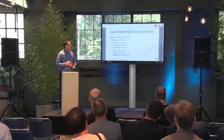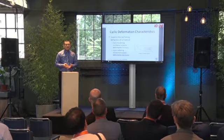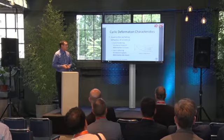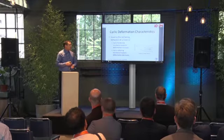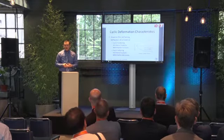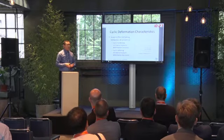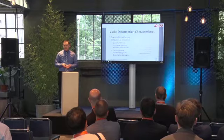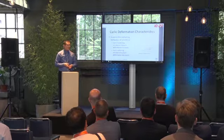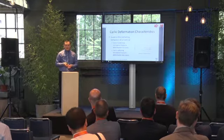The ratcheting behaviour of the material is strongly governed by the cyclic deformation characteristic. Generally, there are three different types of cyclic deformation characteristics: cyclic hardening, cyclic stable, and cyclic softening. For a material with the cyclic hardening characteristic, it has increased resistance to plastic deformation. In contrast, for materials with the cyclic softening characteristic, it has reduced resistance to plastic deformation.